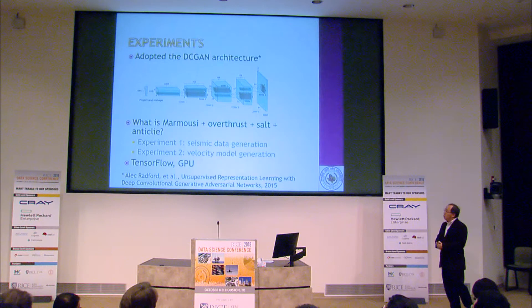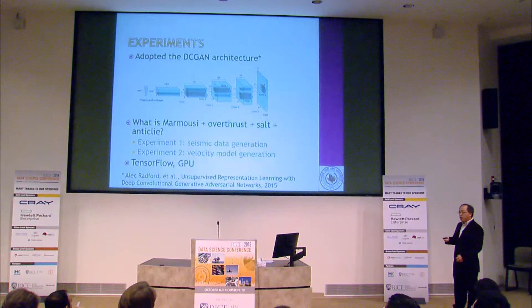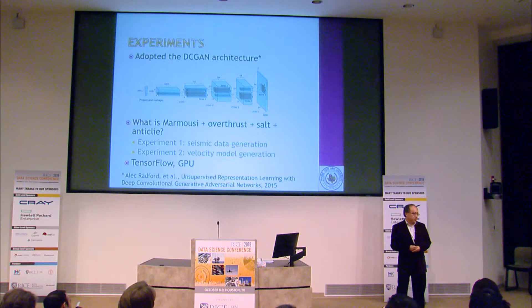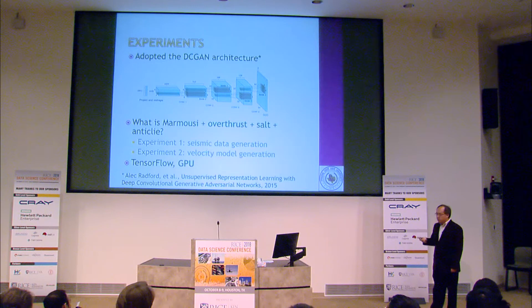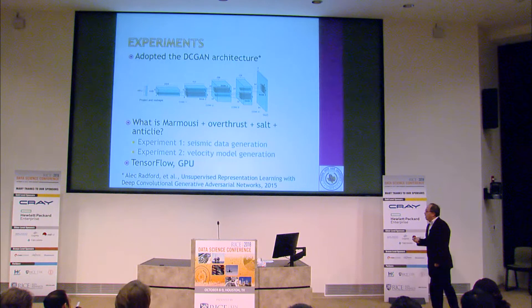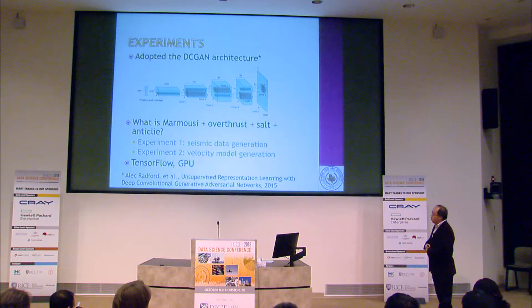We adopted DCGAN — Deep Convolutional GAN — which has better stability for training. We asked ourselves: if we can add one man to a woman and get something new, what if we add some geological features together? Starting with a simple model, we can add some overthrusts, plus some faults, plus some anticlines — can we make a more realistic model that we cannot get from the real world, and then use that for training?